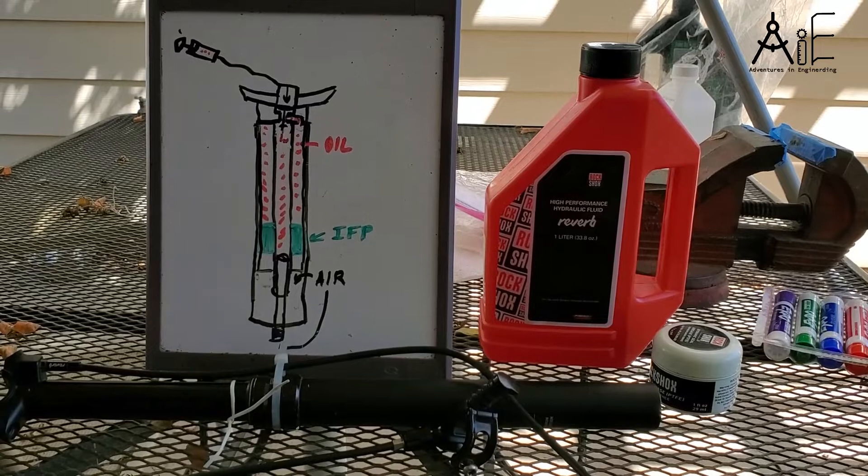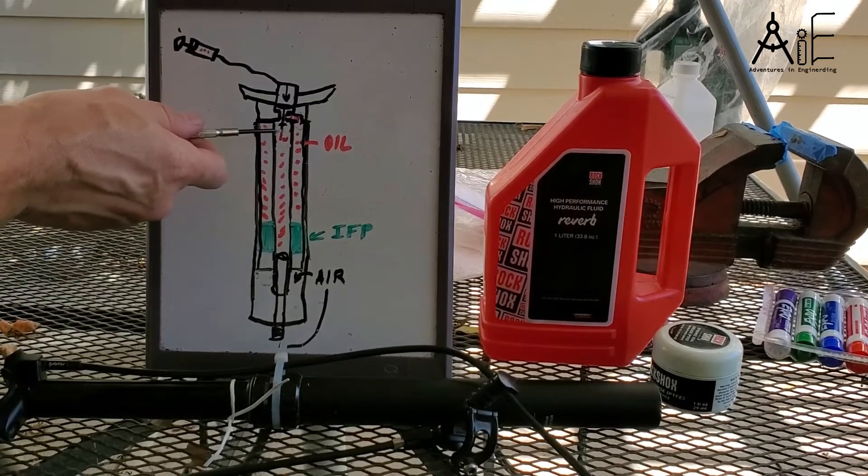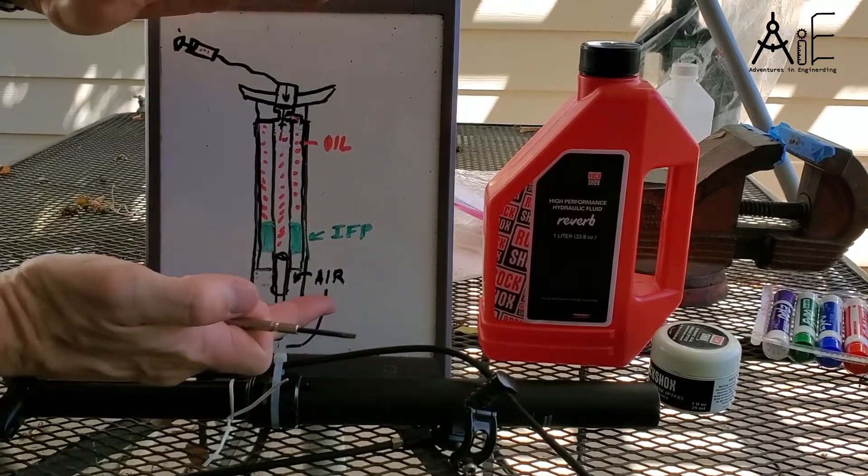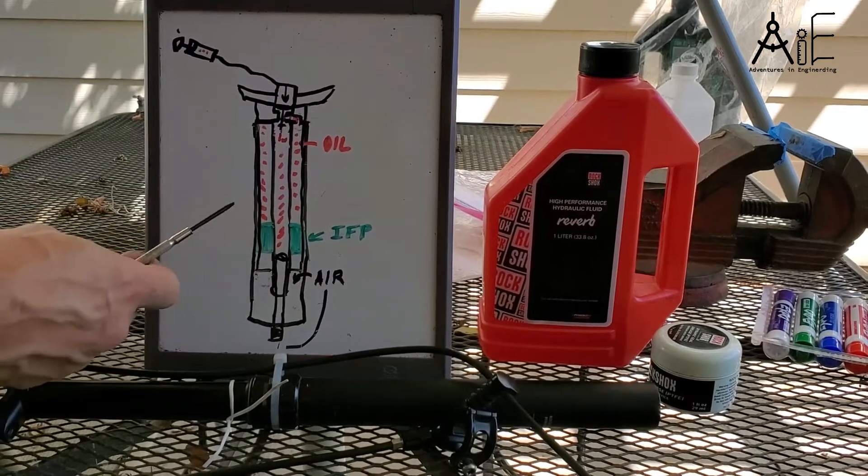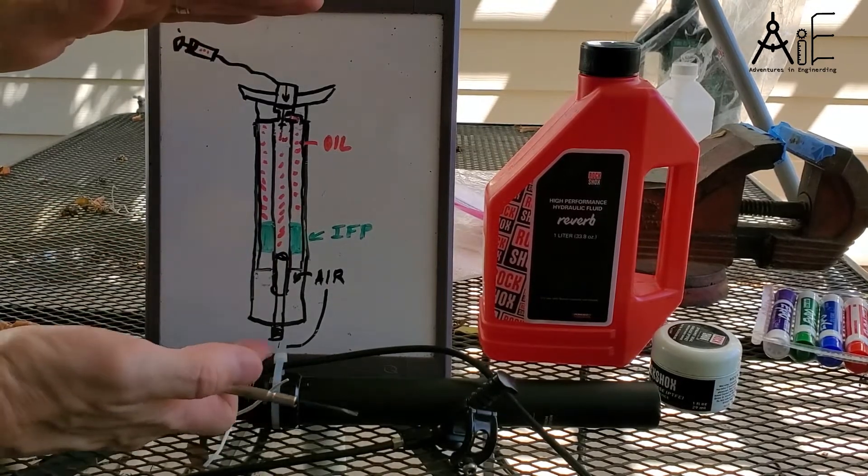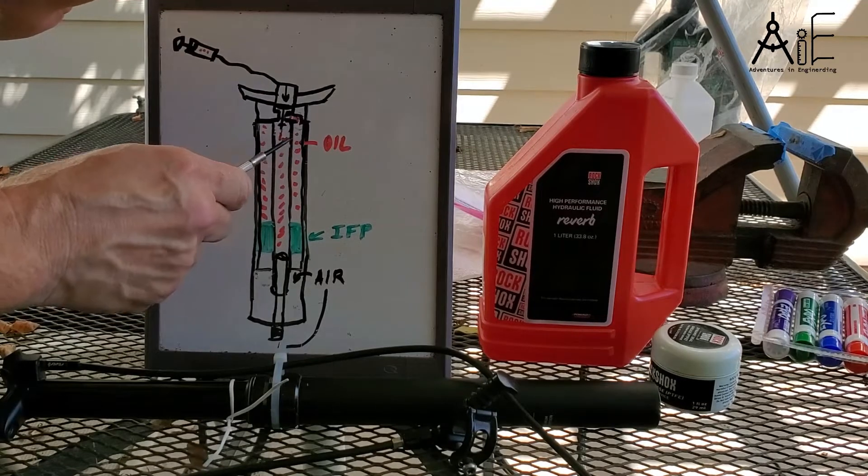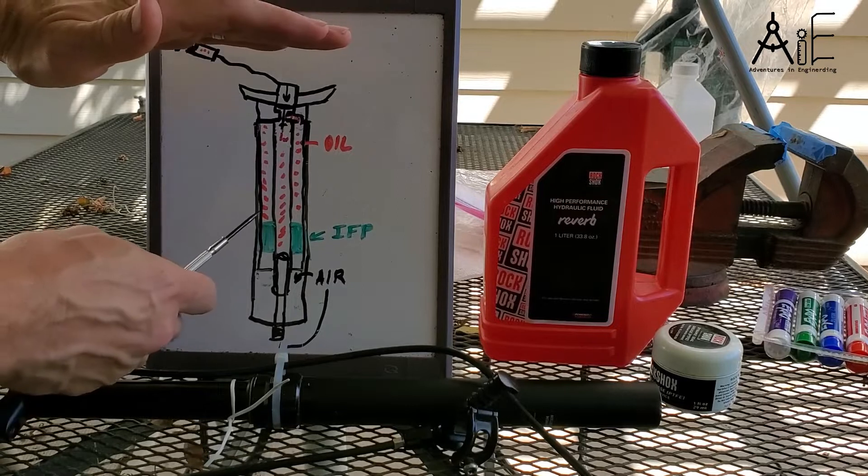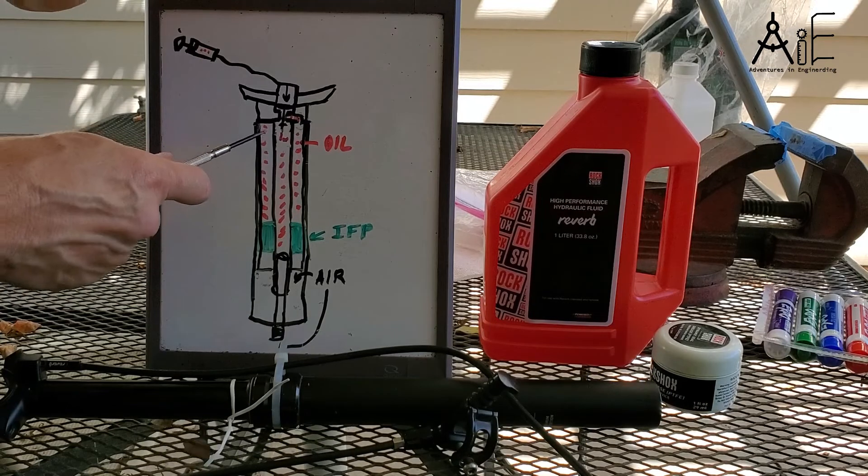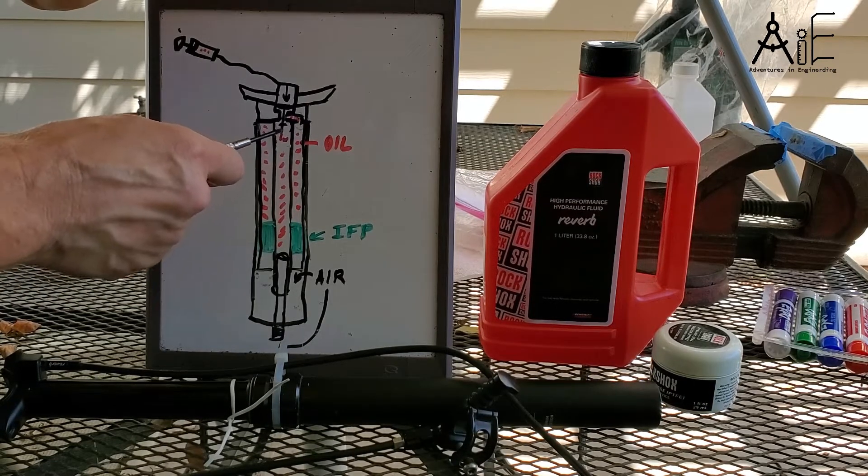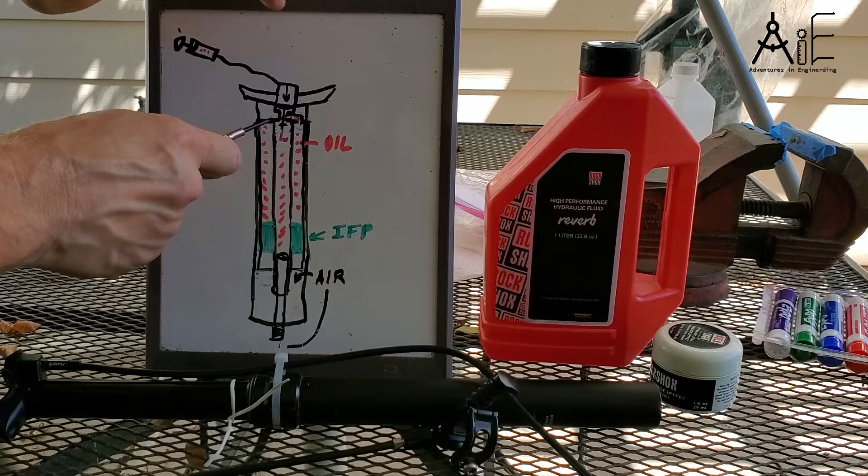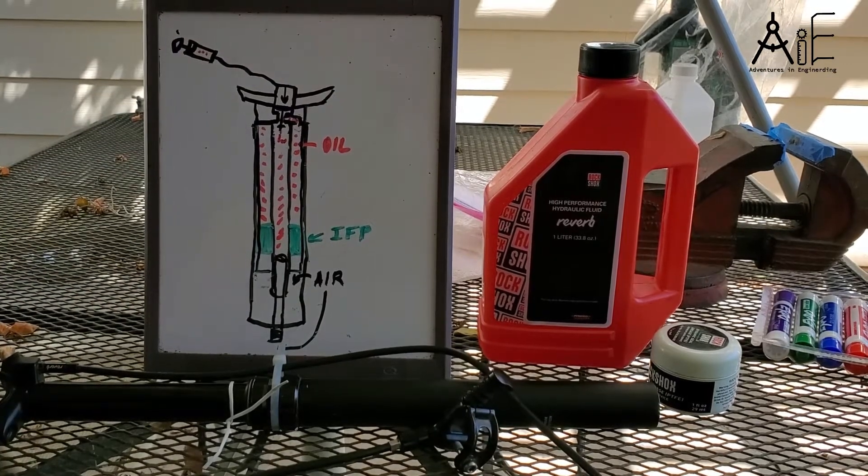The reason you get a saggy seat post is if you get air inside of here. Air is compressible, so when you push on it, that air compresses and it can come down a little bit. You may find that if you push your button, compress your seat just a little bit, that firmness comes back because the air moves back out into the outer chamber. What you want to do is bring it all the way up to full height so that all that air gets pulled back down into this chamber. We're going to take the top off, take the poppet valve off, refill the missing fluid, displace that air, and put the poppet valve back in. That should firm up the seat post again.